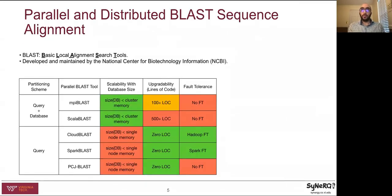In this paper, we focus on BLAST — short for Basic Local Alignment Search Tools — the most widely used sequence alignment algorithm, developed and maintained by the National Center for Biotechnology Information, or NCBI. Existing solutions attempt to optimize multiple design parameters, including scalability with database size, upgradability — which denotes the programming effort required to upgrade an existing parallel BLAST tool to work with new releases of NCBI BLAST code — and fault tolerance, which is the efficient rescheduling of failed tasks on a large-scale distributed system.